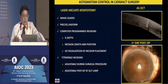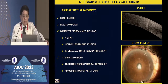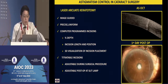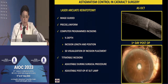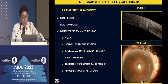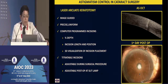Laser arcuate keratotomy is slightly better than manual limbal relaxing incisions because the incisions are image-guided, more precise and uniform, and depth can be precisely controlled to 80–90%. These incisions are also titratable: you do not open them on the first post-operative day, wait about a week, and depending on residual astigmatism you can open them. This can be used for small amounts of astigmatism where a toric IOL is not indicated, to titrate residual astigmatism post-operatively.